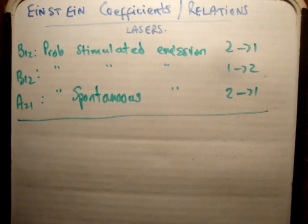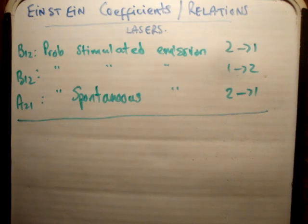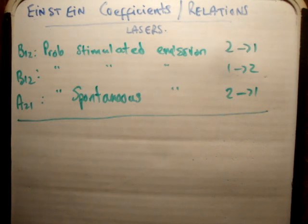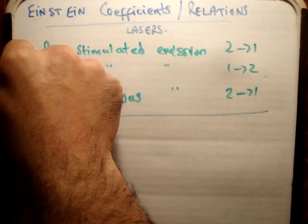In this video I'd like to talk about the Einstein coefficients or relations for lasers. Einstein, back in the day, was analysing systems and solid-state systems and so on, and he predicted constants. He didn't know what they exactly were, but he predicted that they would be found, and quantum mechanics has allowed us to calculate these. The three coefficients he spoke about are B12, B21, and A21.